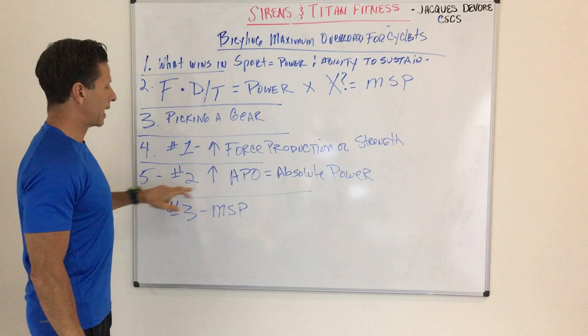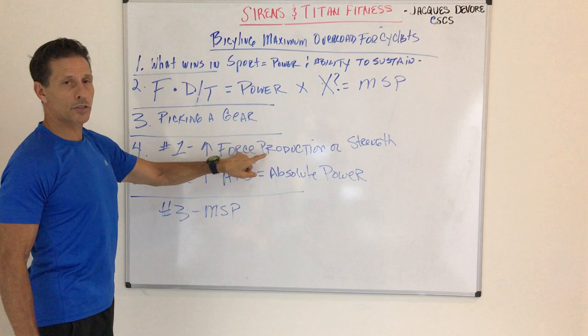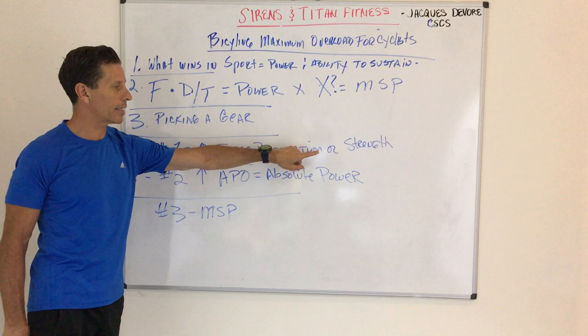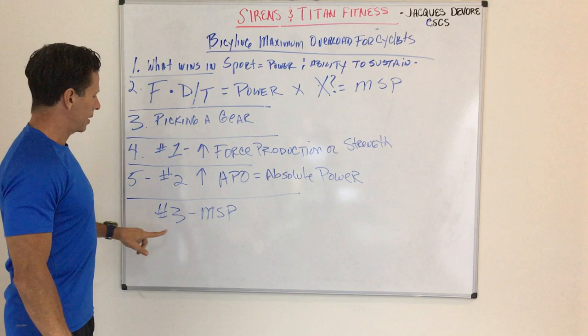Then the next thing is what I call APO, absolute power. So we add velocity to the strength to see how high can you jump, how high can you box jump, broad jump. There's a number of examples in the book. Once we've established that, we've increased that by adding strength to the equation, we're trying to get a baseline level of that.